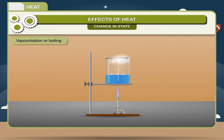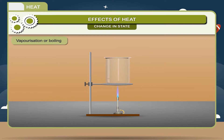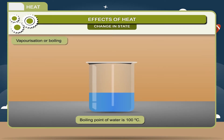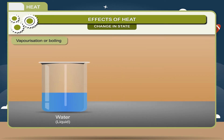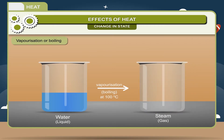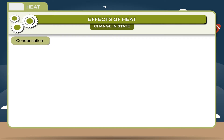Vaporization or boiling is the process in which a liquid changes into gaseous state at constant temperature by absorbing heat energy. The constant temperature is called the boiling point, which is different for different liquids. For example, the boiling point of water is 100 degree Celsius — water (liquid) vaporization/boiling at 100 degree Celsius gives rise to steam (gas).